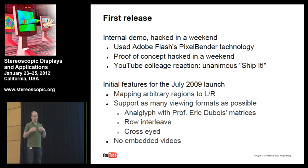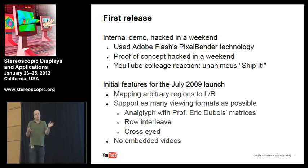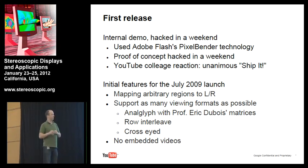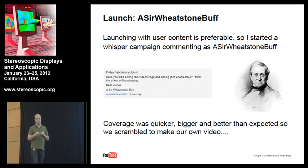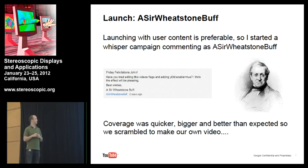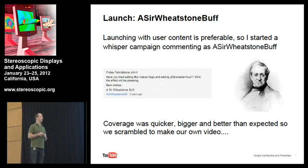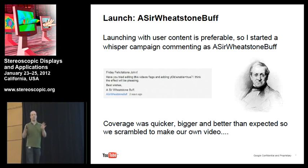The question was: how do we get this out? I didn't want to make a video and say 'Hey, my name's Pete, I work for YouTube, here's an awesome video I made,' because that's not what YouTube's really about — it's about users uploading content. So I had a sneaky plan. I created an account called 'Sir Wheatstone Buff,' named after Sir Wheatstone, the inventor of the stereoscope, and posted: 'Friday felicitations, John. Have you tried editing this video's flags and adding yt3d:enable=true? I think the effects will be pleasing.' When I say it didn't work — it worked overly well. The feature was picked up, there was actual press coverage, quicker, bigger, and better than expected. So we scrambled to make our own video to say: hey, this is the new feature, this is how you can make one.